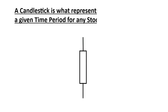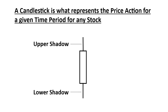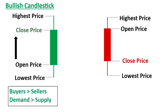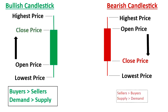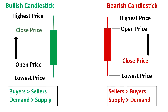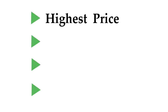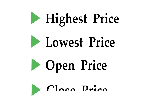Now that we've covered all the basics: a candlestick represents the price action for a given time period for any stock. A candlestick has three parts — the upper shadow, the lower shadow, and the body. There are two types: the bullish candlestick, which is green, represents an increase in price, and is formed when there are more buyers than sellers. And the bearish candlestick, which is red, represents a decrease in price, and is formed when there are more sellers than buyers. The candlestick tells us four things about the price: the highest price, the lowest price, the open price, and the close price.